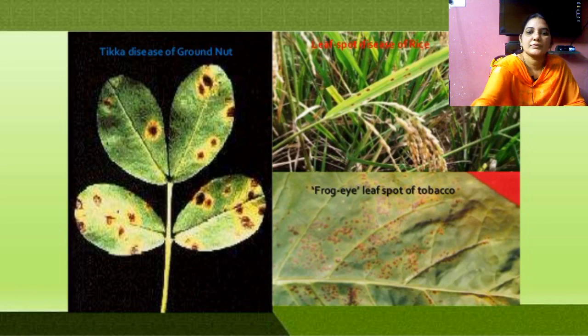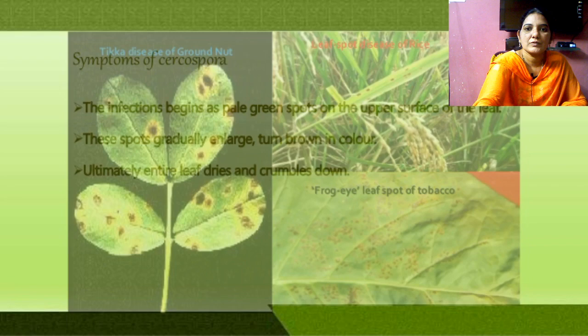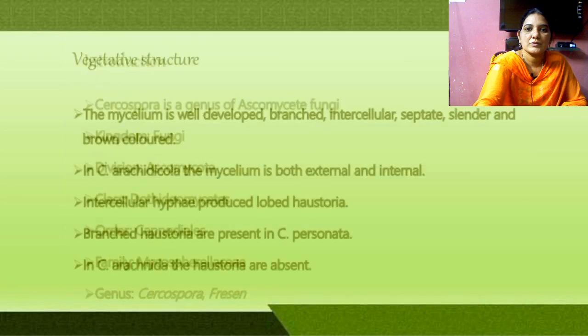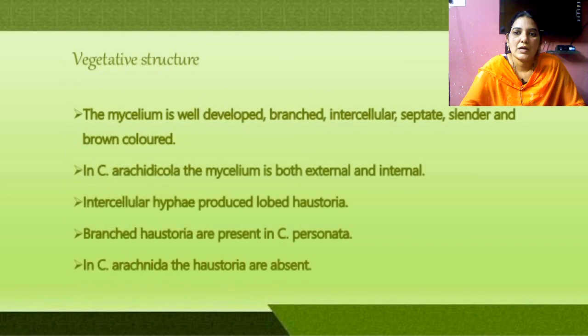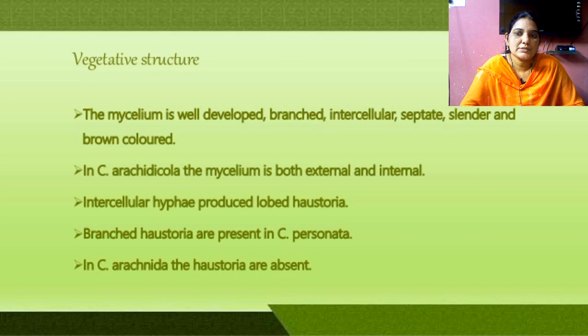This is one type of fungi. Two types are there: Cercospora personata and Cercospora arachidicola. These two species cause Tikka disease on groundnut plants.